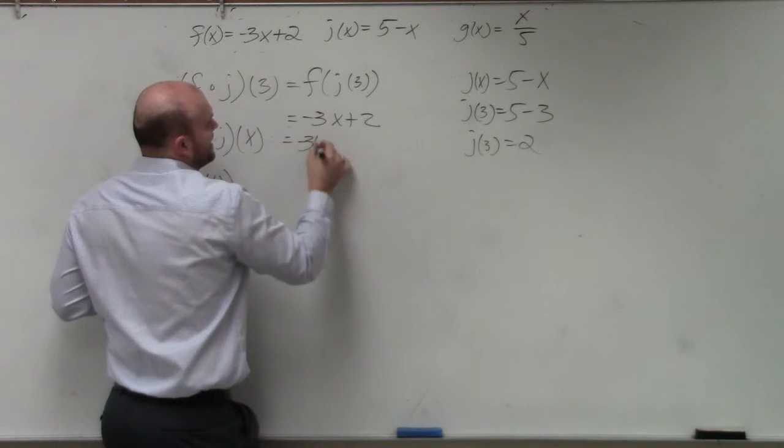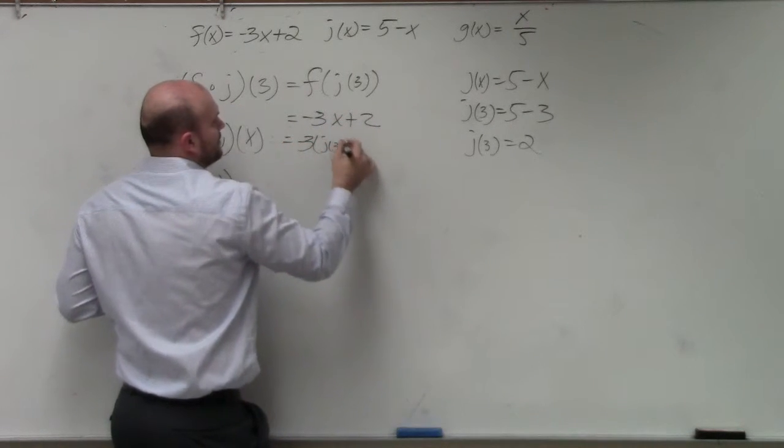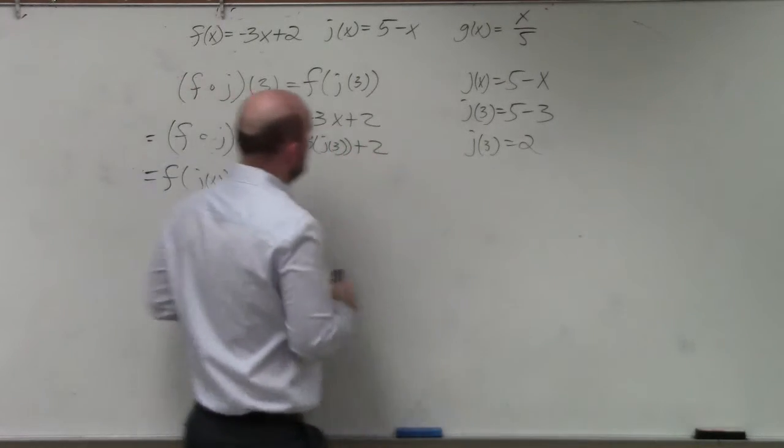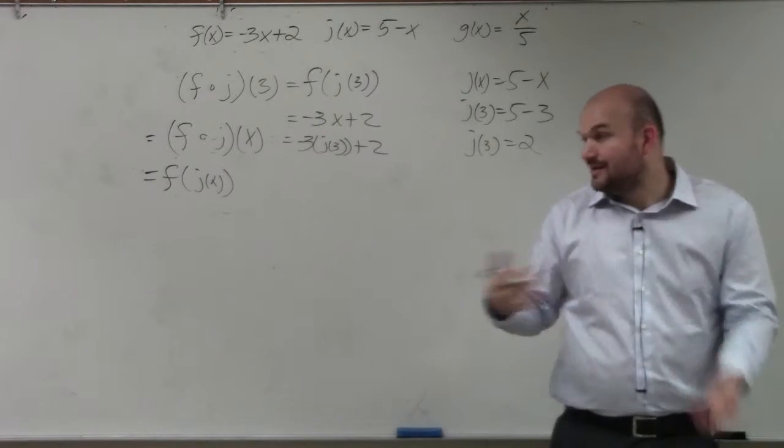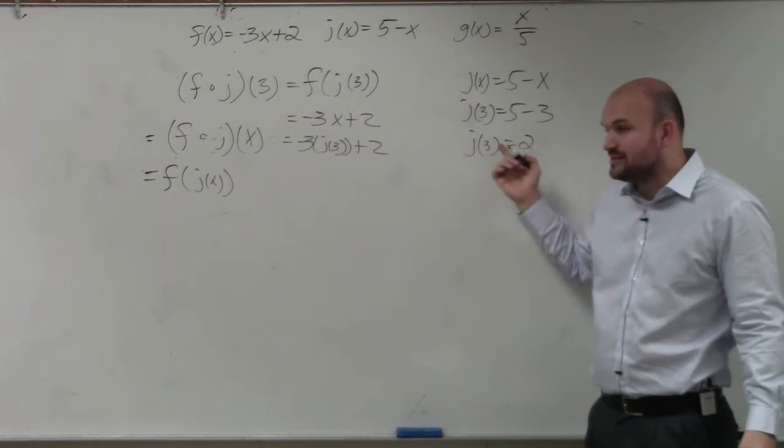However, that's negative 3 times j of 3 plus 2. You guys see what I did? I plugged the j of 3 in for x, right? Well now, do we already know what j of 3 is?